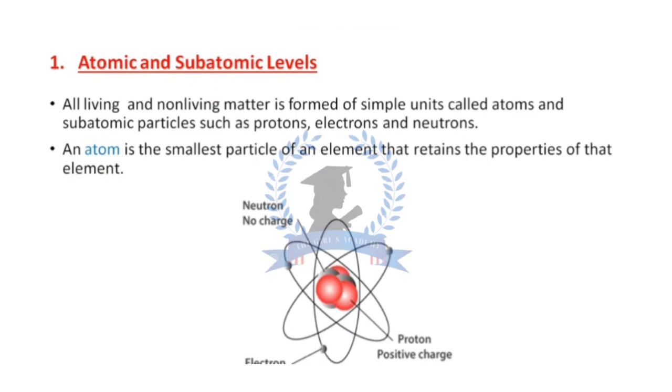An atom is also a very small particle. All living and non-living matter is formed of simple units called atoms and subatomic particles such as protons, electrons, and neutrons. This is very important to understand: atom is the basic unit of all living and non-living matter. It includes all living organisms like animals, plants, and microorganisms, and non-living matter like air, water, soil, light, everything. In this universe, everything is made up of atoms.